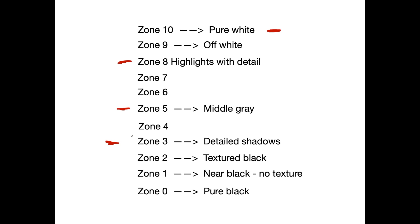Backing up a little bit: zone three is our shadows, zone five our middle gray, and zone eight is our highlights with detail like fluffy white clouds or a white dress. Notice that between three and eight there are five stops — that is the latitude of our film, from detailed shadows to detailed highlights. That is the capability of our film. In later videos we're going to look at how to bring things pushed too high by the brightness of the sun back into zones within the latitude of our film.